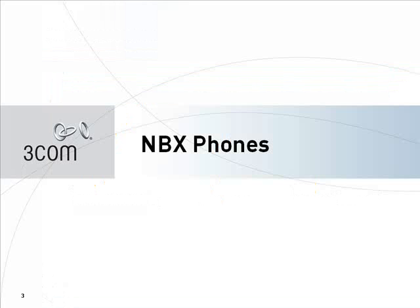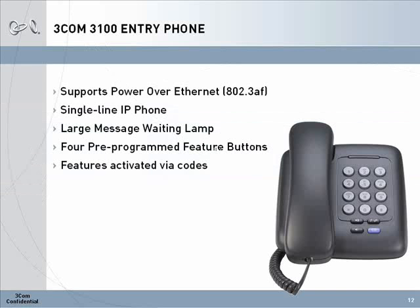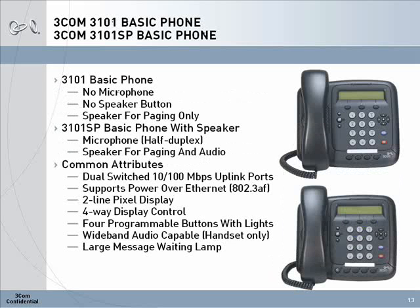3Com offers a wide array of phone options. All 3Com IP phones support the 802.3AF Power over Ethernet standard and have a large message waiting indicator lamp. All the 3Com 3100 series phones offer wideband audio support and are fully configurable through the web interface. The 3Com 3100 entry level phone is a single line IP phone with no display. The 3100 has four fixed configuration buttons, and many NBX advanced features can be activated by using feature codes. The 3100 has a single Ethernet connection.